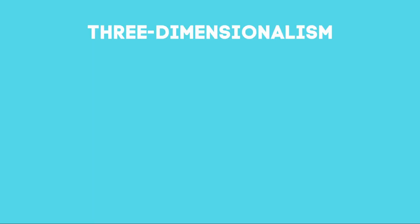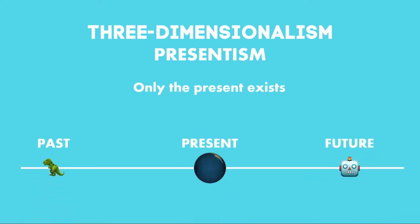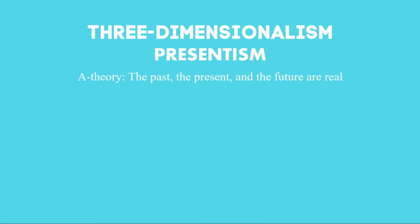Let's start talking about three-dimensionalism. Three-dimensionalism is also called presentism, because it argues that only present events and things exist. So, a three-dimensionalist will talk about the past as having existed, and say that the future will exist. However, the only things and events that simply exist are the ones in the present. So, three-dimensionalism is an A-theory. It says that this distinction between past, present, and future is real. In other words, it claims that being present is a feature of an object, and that the past and the future are not simply a matter of perspective.